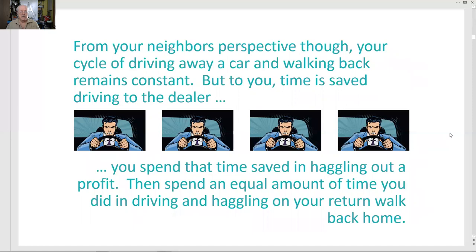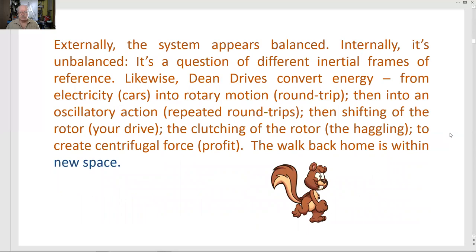From your neighbor's perspective though, your cycle of driving away a car and walking back remains constant, but to you, time is saved driving to the dealer. You spend that extra time in haggling out a profit, and then spend an equal amount of time you did in driving and haggling on your return walk back home. Externally, the system appears balanced. Internally, it's unbalanced.